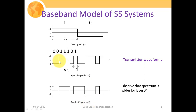Bit +1 is multiplied with the chipping sequence, and bit -1 is multiplied with the chipping sequence (giving an inverted result). One important observation: the spectrum is wider for larger N. If we have a large number of chips in the PN sequence, the spectrum will be much wider. We will see this through a figure in upcoming slides.